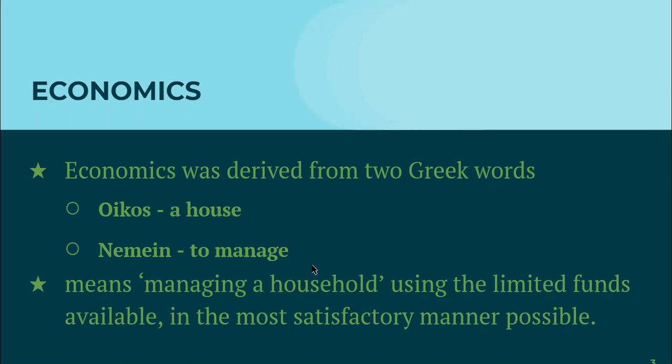What is economics? We discussed the definitions last year, so I will not do that today. But let's look into the word. Economics is derived from two Greek words — 'oikos,' which means a house, and 'nemin,' which means to manage. So economics really means managing a household using the limited funds available in the most satisfactory manner.